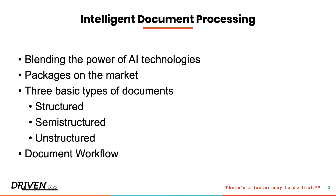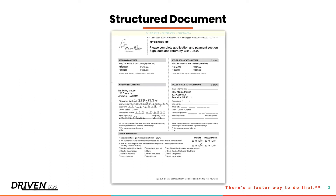For this presentation I'll go through the different types of document structures that we see and give you a feel for how we extract data from those structures and where AI fits into that. The simplest type of document, at least from a data extraction perspective, is called structured documents. From these documents we need to extract printed, handwritten, or even checkbox values. Everything in a structured document is either at an absolute location on the page or at some relative offset to a known anchor point like a label.